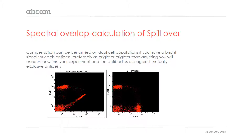Here you can see we go from this uncompensated dot plot to this compensated dot plot. We know that these antigens are mutually exclusive, so it's a matter of aligning the positive mean with the negative, and the positive mean here with the negative.